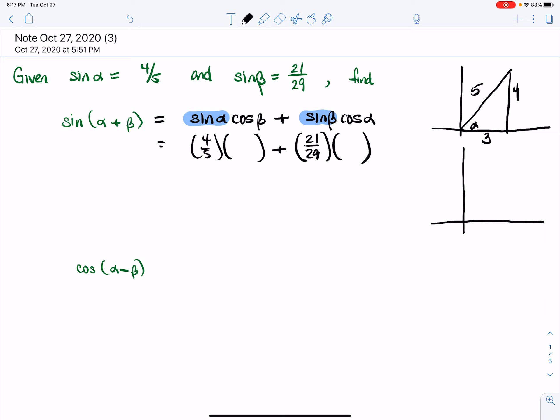And in the other angle, we know that sine of beta is 21/29. So I'm going to say that looks something like this. So this is 21 and this is 29. Pythagorean theorem would tell us that this side is actually 20.